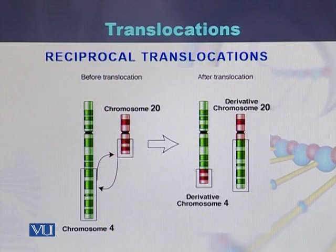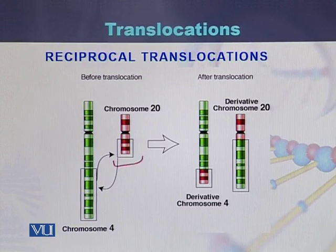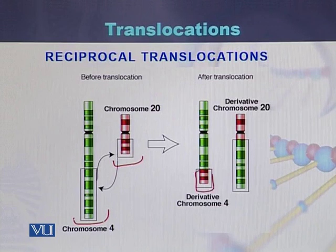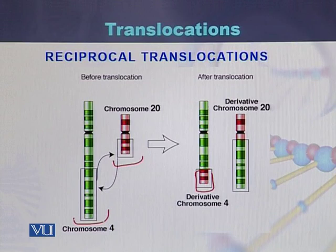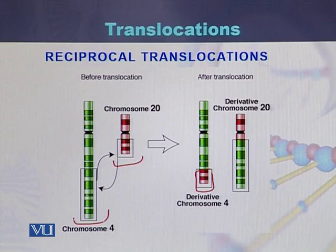Reciprocal translocation before and after: when there is no translocation we can see chromosome 20 and chromosome 4. After reciprocal translocation, the fragment of chromosome 20 will attach to chromosome 4, and the part of chromosome 4 will attach to chromosome 20 — this is vice versa. Here the example is of chromosome 4 and chromosome 20 exchanging DNA fragments, which is called reciprocal translocation.